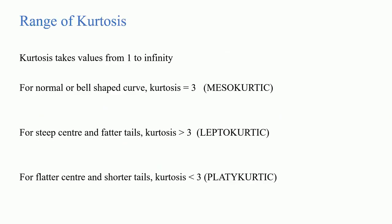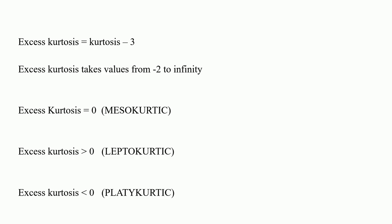Now coming to the range of kurtosis: kurtosis takes values from 1 to infinity, so the minimum possible value is 1. For a normal bell shaped curve — a mesokurtic distribution — kurtosis equals 3. For a leptokurtic distribution, kurtosis is greater than 3. For a platykurtic distribution, kurtosis is less than 3. Instead of kurtosis we generally work with excess kurtosis, where excess kurtosis equals kurtosis minus 3.